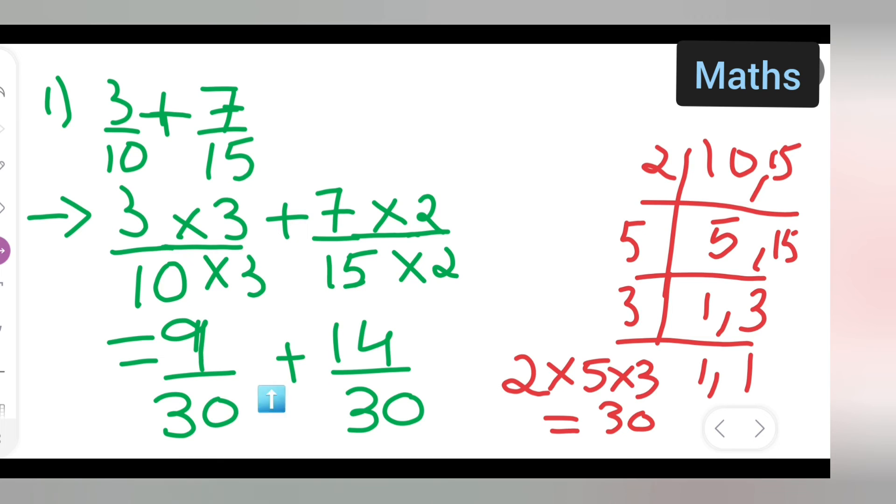Now write 9 plus 14 upon 30. So what you all are going to get is 9 plus 14 will be—sorry, 9 plus 14 will be 23, right? So 23 upon 30 will be your answer.